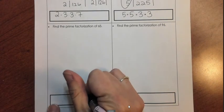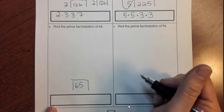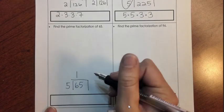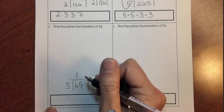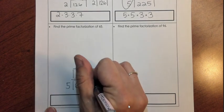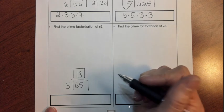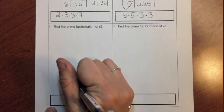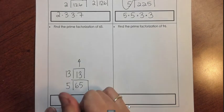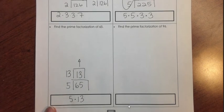A couple more just so we can get the hang of it. 65 is the bottom of our cake. I'm going to put 5 in there. 5 goes into 65 thirteen times. A prime number that goes into 13 is 13, and that gives me a 1. So the prime factorization is 5 and 13.